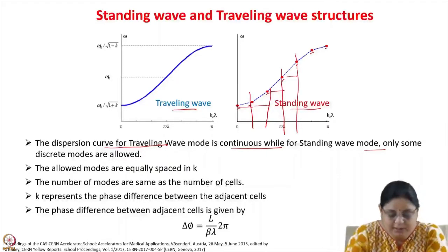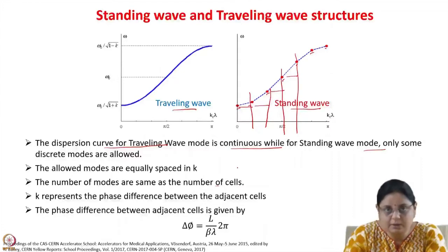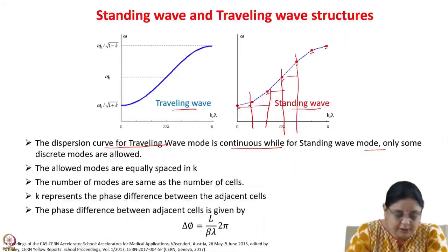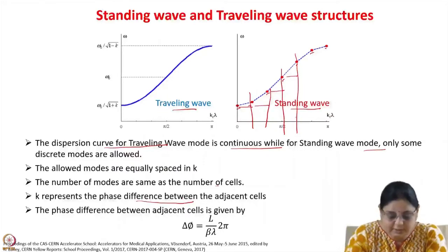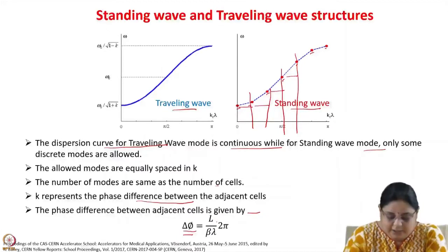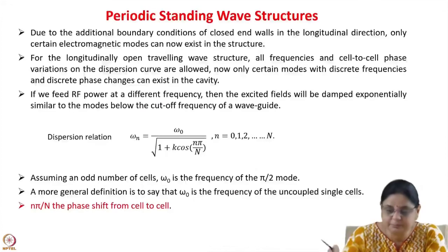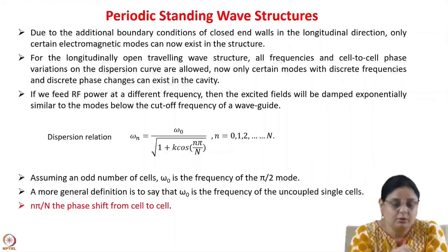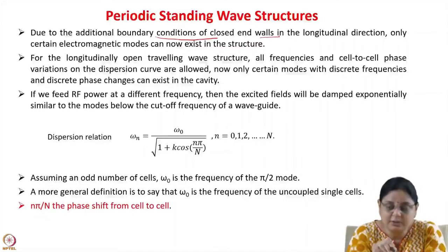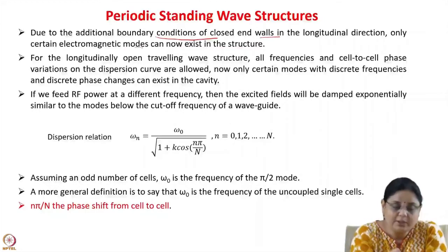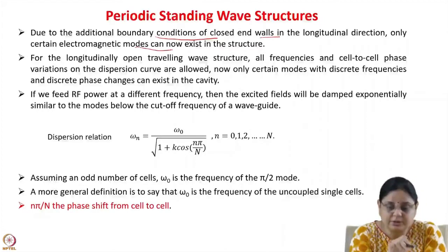The number of modes is the same as the number of cells — as many cells you have, that many modes you will have. K represents the phase shift between adjacent cells. The phase difference Δφ is given by L divided by βλ times 2π. Due to the additional boundary conditions of closed end walls in the longitudinal direction, only certain electromagnetic modes can exist in the structure. This is for a periodically loaded cavity.